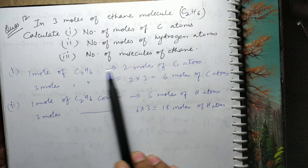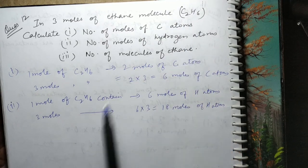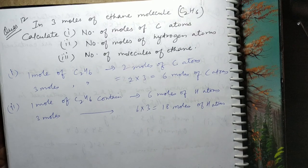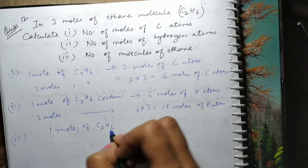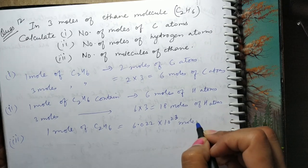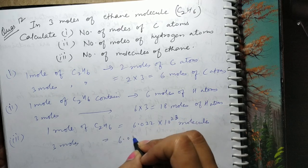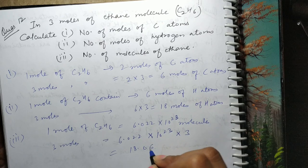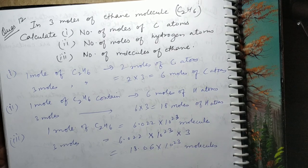Third part: number of molecules of ethane. 1 mole of ethane = Avogadro's number of molecules. So 3 moles mein simply multiply karenge — answer = 18.06×10²³ molecules.